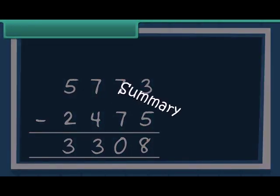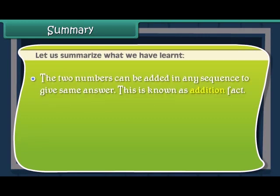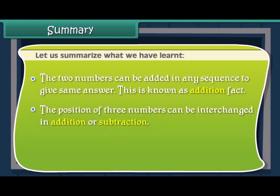Summary. Let us summarize what we have learned. The two numbers can be added in any sequence to give the same answer. This is known as addition fact. The position of three numbers can be interchanged in addition or subtraction.